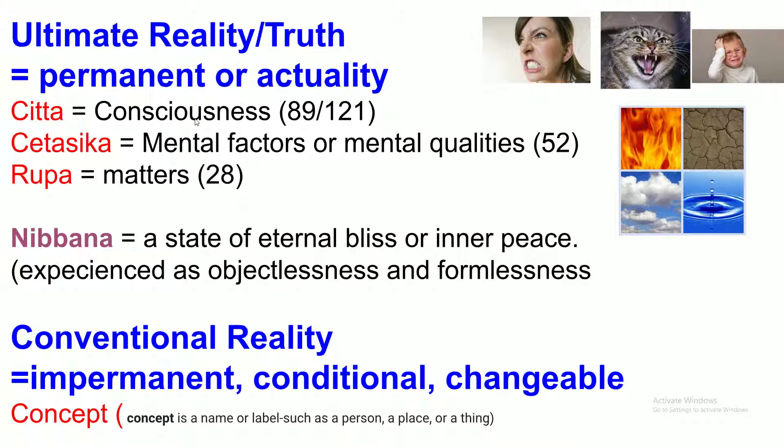Citta is consciousness or awareness of the object. It has 89 consciousnesses in brief and 121 consciousnesses in extended method. It is like clear water. Number two, Cetasika. It is coloring the consciousness. It's called mental factors or mental qualities. It has 52 mental factors.